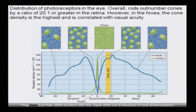This is how rods and cones are distributed. From Progress in Retinal Eye Research, 2009, volume 28, issue 4 — overall, rods outnumber cones by a ratio of 20 to 1 or greater in the retina. However, in the fovea, cone density is the highest and is correlated with visual acuity. The fovea region is rich in cones.